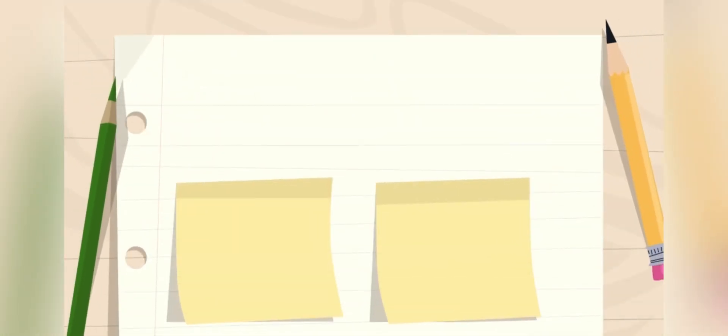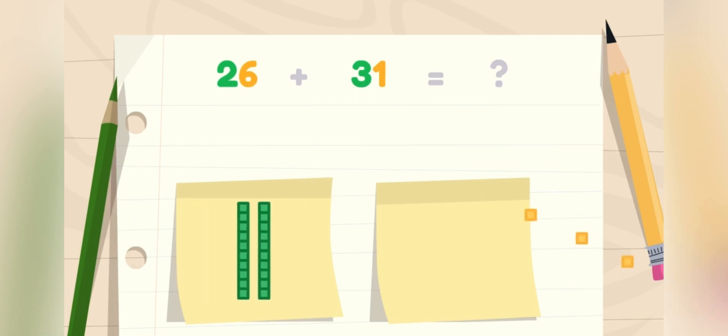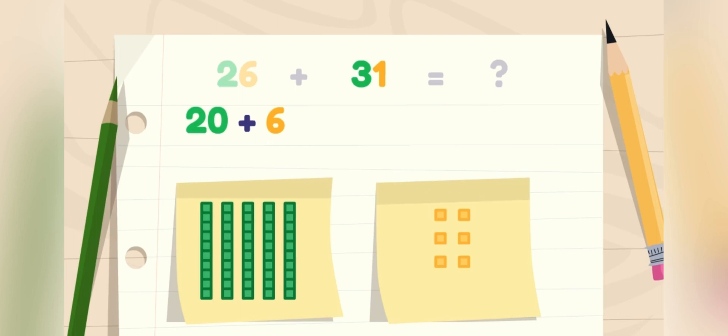I'm wishing to do some addition. What is 26 plus 31? Here is one way to solve it. We can expand the numbers into tens and ones. There are two tens and six ones in the number 26. There are three tens and one one in the number 31.